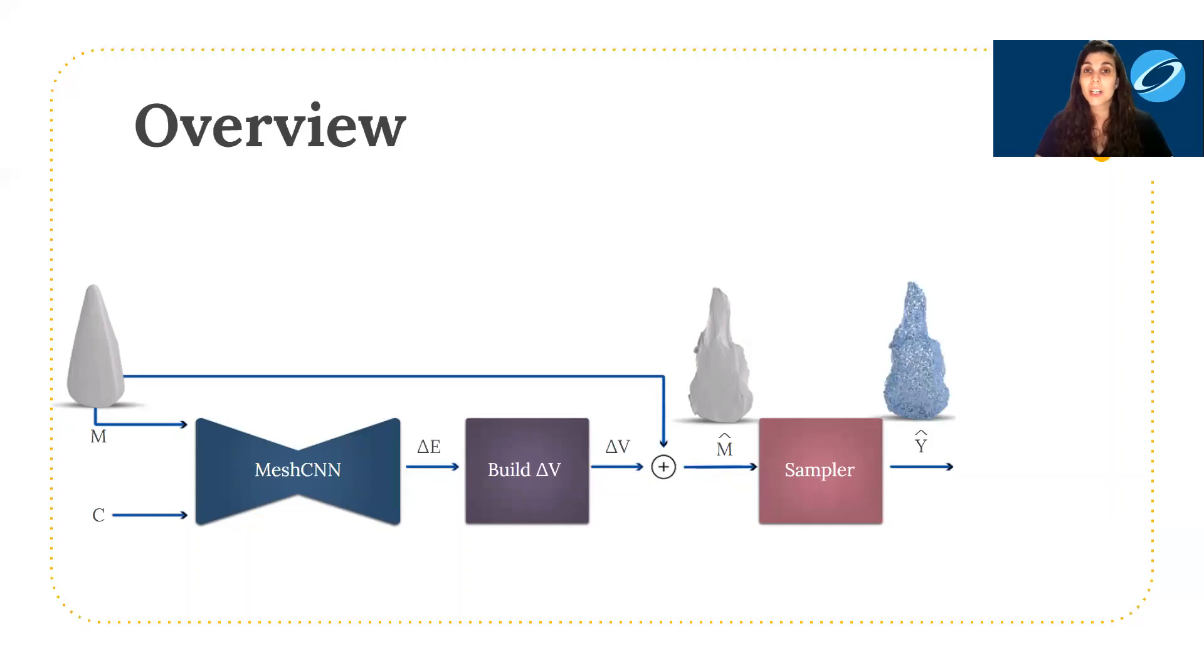The reconstructed mesh goes through a differential sampler. First, the sampler randomly selects a triangle with probability proportional to the face area. Then, a point is randomly sampled on the triangle surface, whose x, y, z location is defined by the three triangle vertices, which is how gradients are back-propagated through the sampler to update the CNN weights, which displace the vertices.